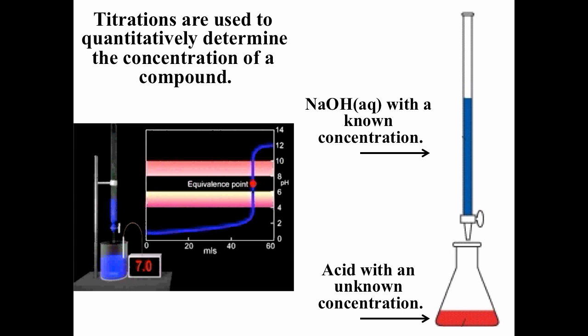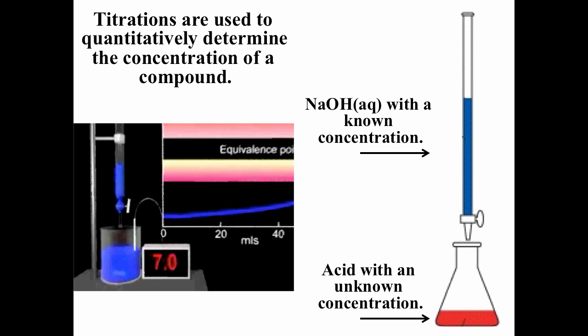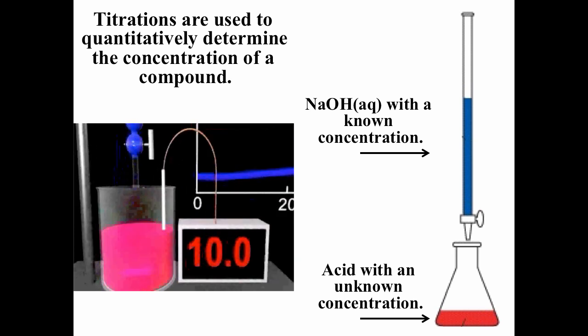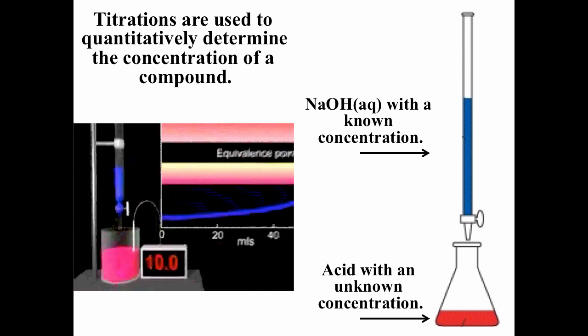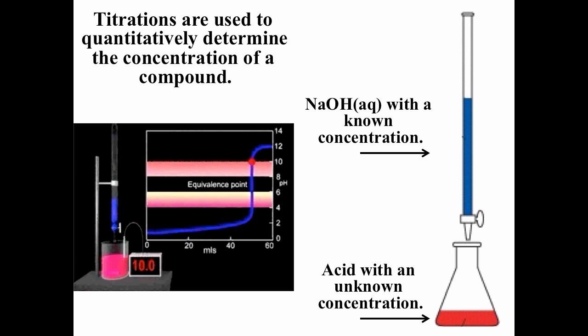We are then at the equivalence point, or endpoint, at which the stoichiometric amount of base required to neutralize the acid has been added. Addition of one drop of NaOH beyond that needed to neutralize the acid causes the pH to increase from 7 to about 10. Thus, the endpoint of the titration can be determined with high precision.